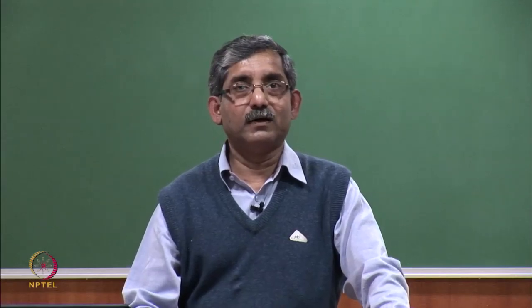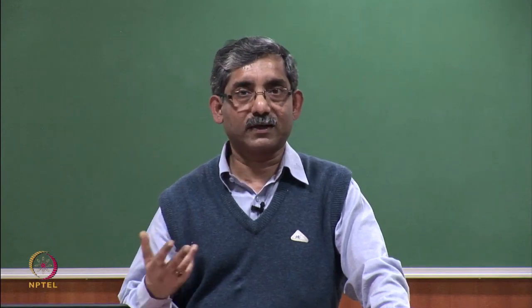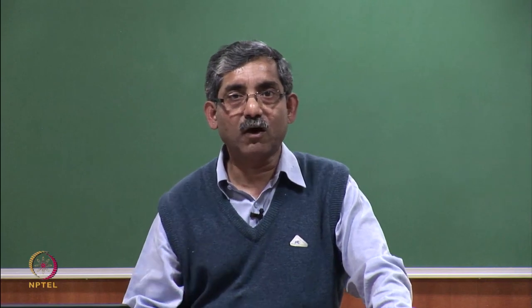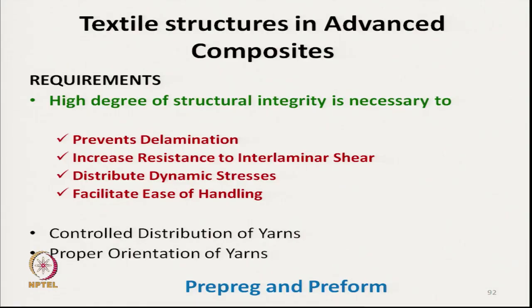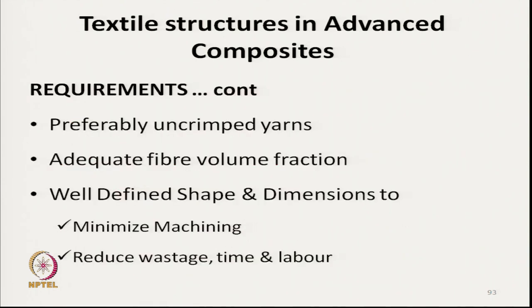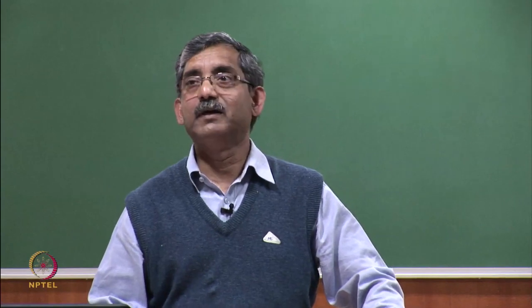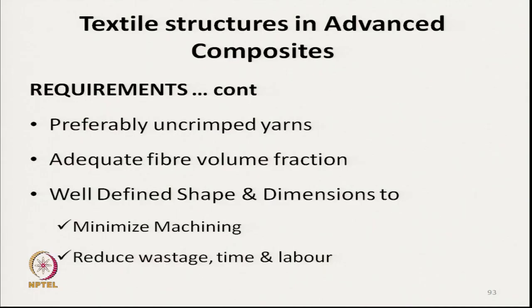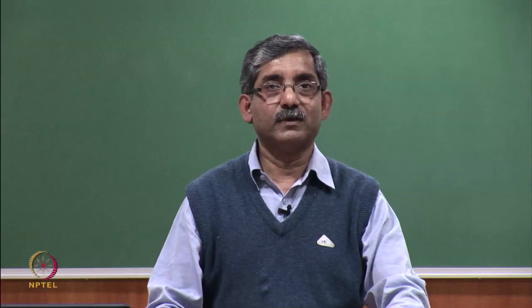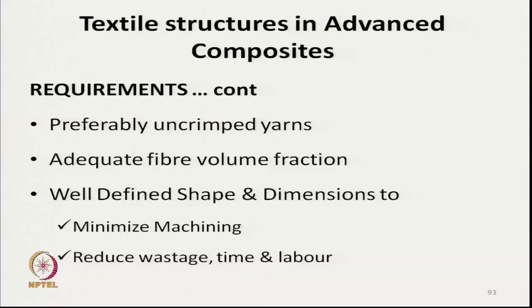To have better characteristics, controlled distribution of yarns in the prepreg or preform is important, so proper orientation of yarns is required. Normally in weaving the yarns are in crimped form, but for composites it is preferable to have crimp-less yarns, which will actually enhance the tensile characteristics and better load sharing of the reinforcing component.